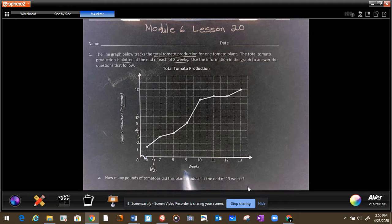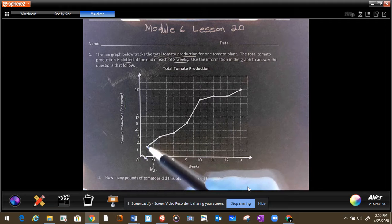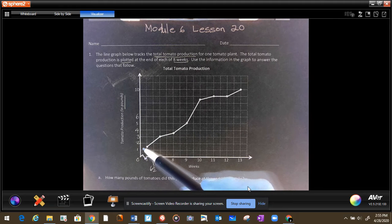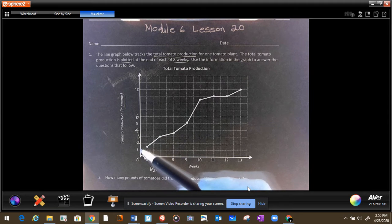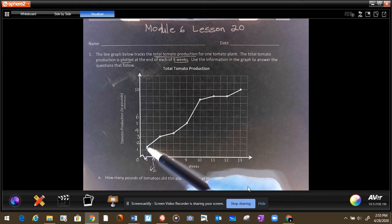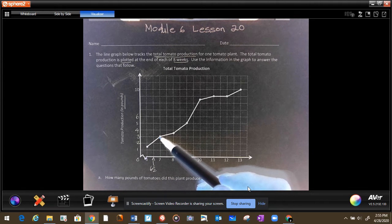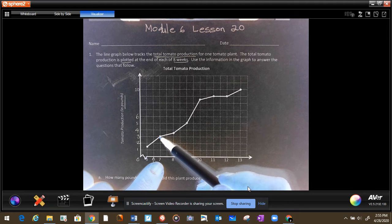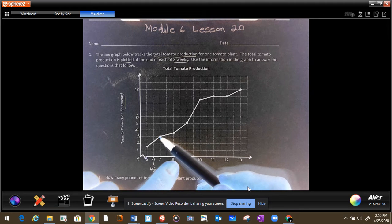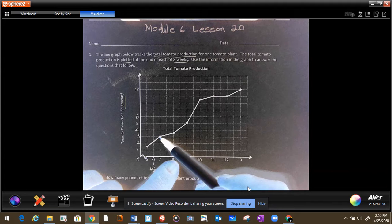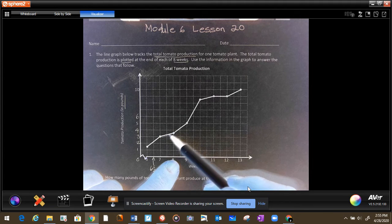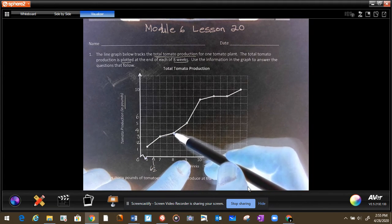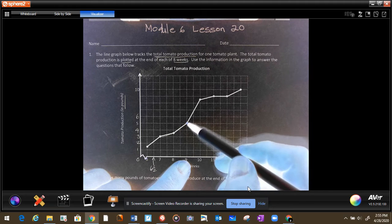Alright, so we can see that from week 7, it grew from probably 1.5 pounds to 3. And then on week 7 and 8, it grew only less than 1 pound. And 8 and 9, it grew almost 2 pounds.